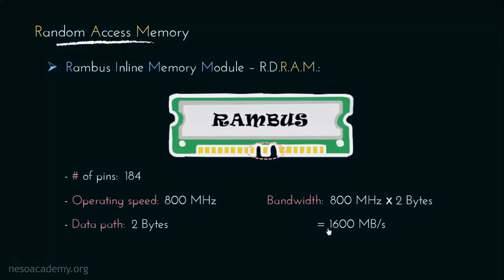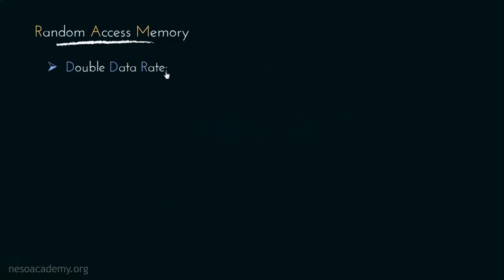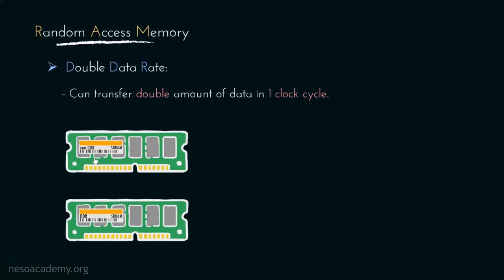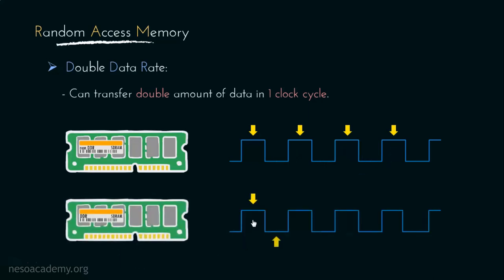RIMMs became very popular momentarily, mainly because of their speed. However, due to the small data path, they were quickly replaced by the next type of RAMs: the DDR, or Double Data Rate RAMs, which were upgrades of DIMM-DRAMs. As the name implies, DDRs can transfer double the amount of data in each clock cycle. A non-DDR RAM transfers data using only the positive level of the clock signal, whereas DDR uses both the positive and negative levels of the clock signal for data transmission — and that is how it justifies its name.